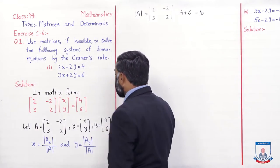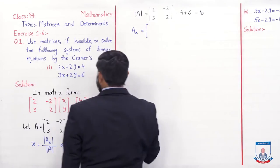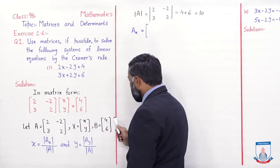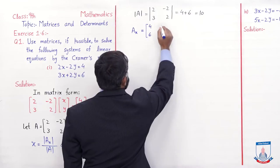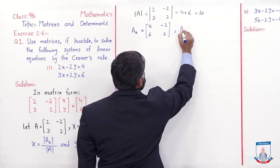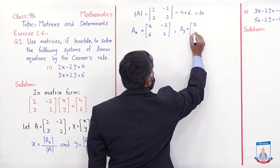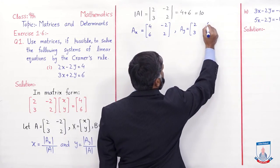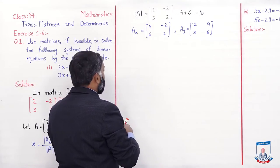Ab Ax matrix pehle likh lete hain. Ax mein jo A matrix hai, us A matrix mein first column ki jagah hum B matrix likhenge aur second column as it is aayega. Toh B matrix 4 aur 6 hai — first column ki jagah 4, 6 likh diya; second column minus 2 aur 2 as it is aagaya. Isi tarah Ay matrix banayenge: Ay matrix mein first column A matrix ka 2, 3 as it is aayega, aur second column minus 2 aur 2 ki jagah pe B matrix wala column 4, 6 likhenge.